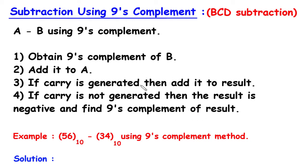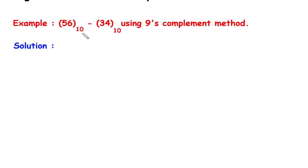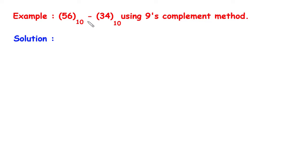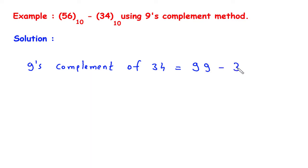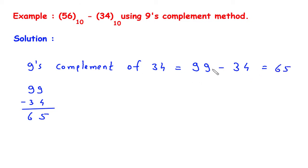We will understand this by an example. Subtract using the 9's complement method. The first step is to obtain the 9's complement of B, which is 34. The 9's complement of 34 is 99 minus 34. 9 minus 4 is 5, and 9 minus 3 is 6. So the 9's complement of 34 is 65. The next step is to add 65 to 56.